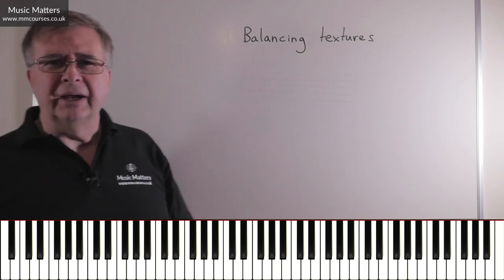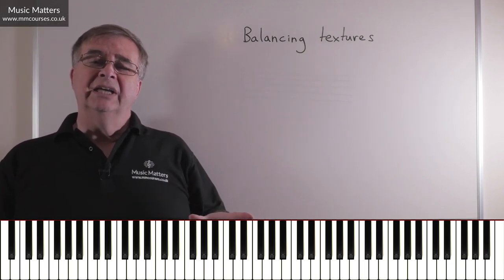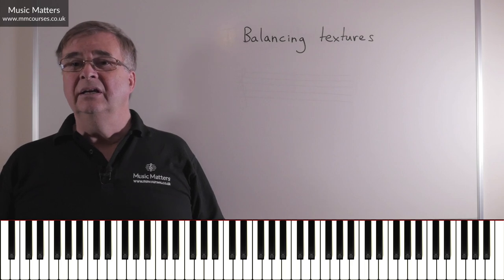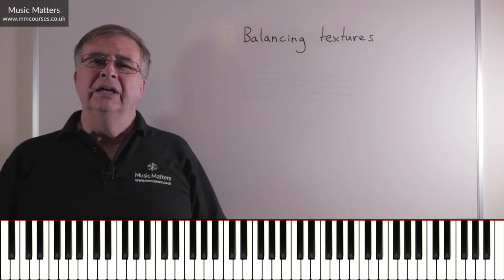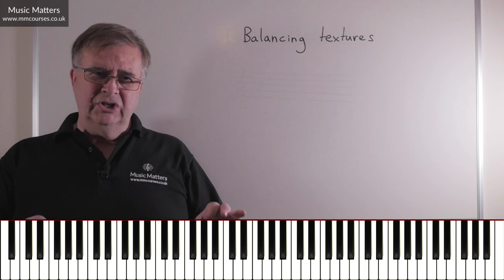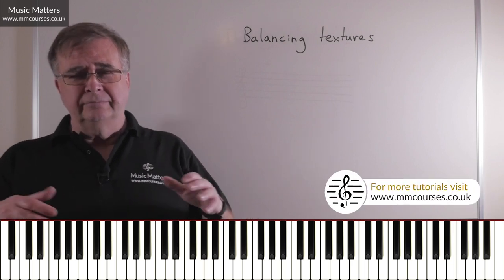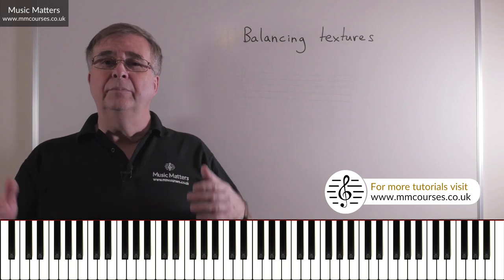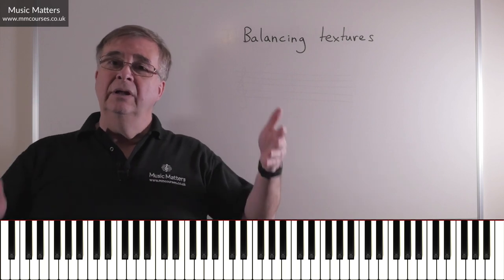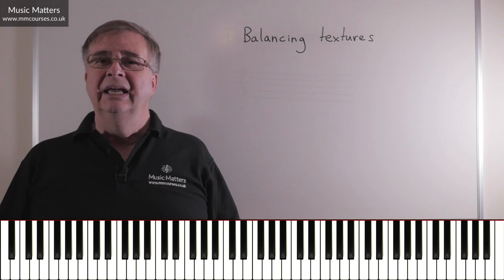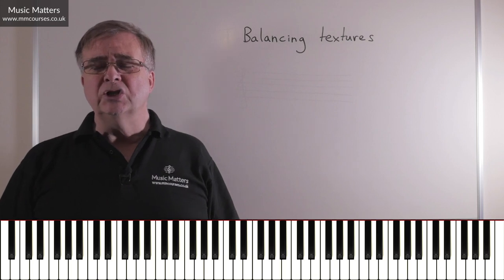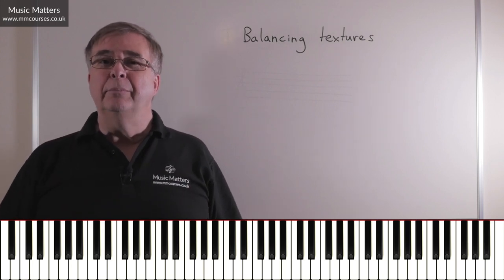So what's all this balancing about? Well, you've got to work out in the texture whether there is a particular line that is more important than another line. For example, you may have a melody in the right hand that's accompanied by something in the left hand. In that case, whatever the dynamic marking is, you probably want the right hand playing a little bit louder. If the tune switches into the left hand, we need to balance the texture differently. How we balance a texture can have a profound effect on the success of a performance.